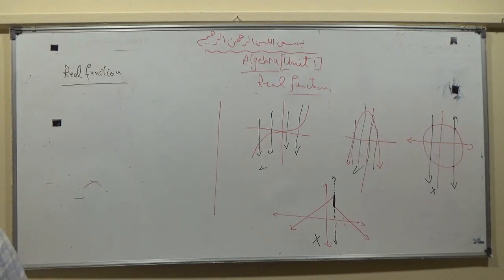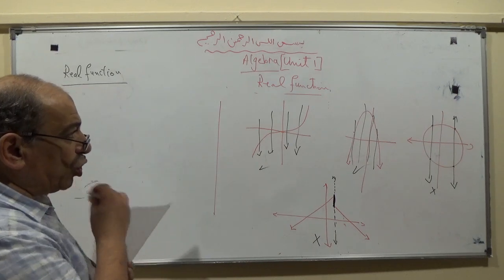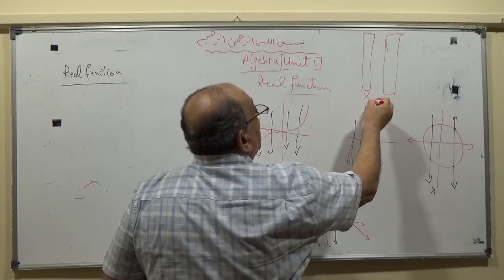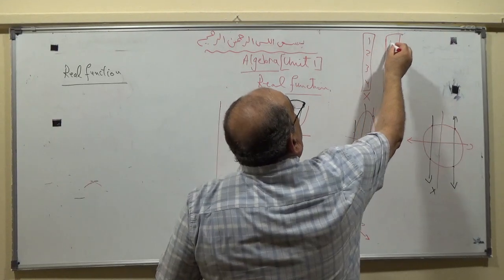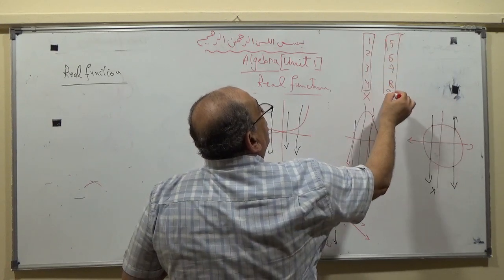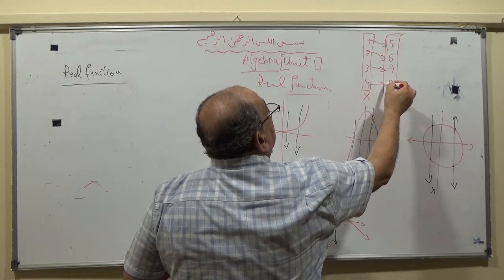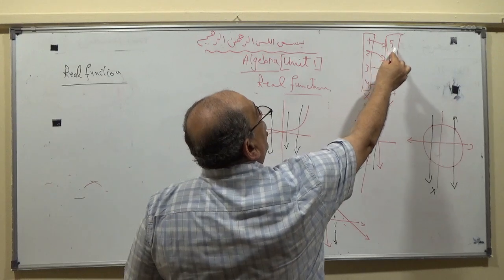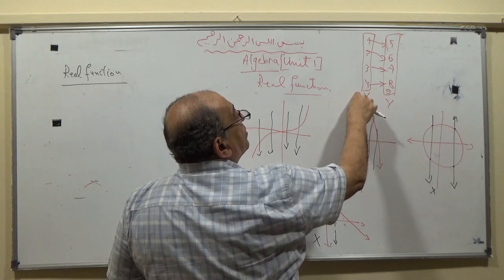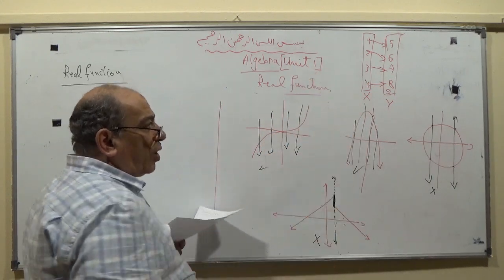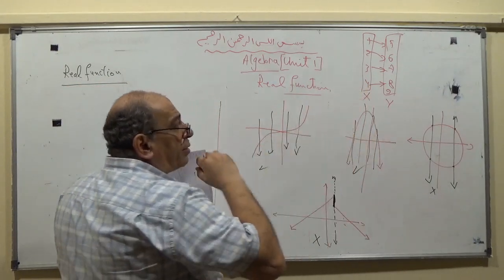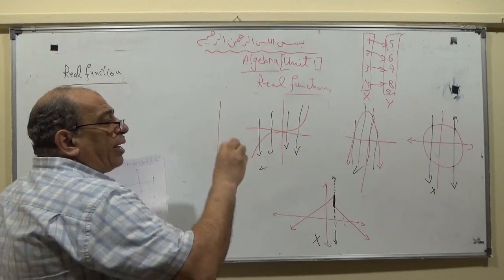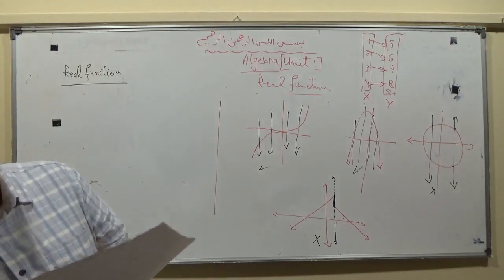Now we focus on the domain and range of a function. We know that in a function from X to Y, X is the domain and Y is the codomain. For example, with mappings 1→5, 2→6, 3→7, 4→9, the range is 5, 6, 7, 8. Since X and Y are subsets of real numbers, this is a real function. We can determine the domain and range from the graph of a function.